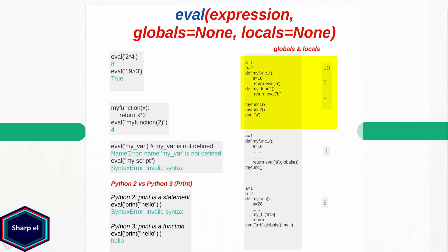Let's see an example. I have two global variables a and b. I define a function myfunc1 and inside it I declare a local variable a equal to 10. In myfunc1 I call eval passing variable a as a string expression. Similarly I define myfunc2 and call eval passing variable b as a string expression. In main I call both functions. myfunc1 returns 10 because the string expression refers to the local variable a which is 10. In myfunc2 there is no local variable b, so the global variable b is returned. When I call eval in main, it refers to the global namespace and I get a equal to 1 as output.